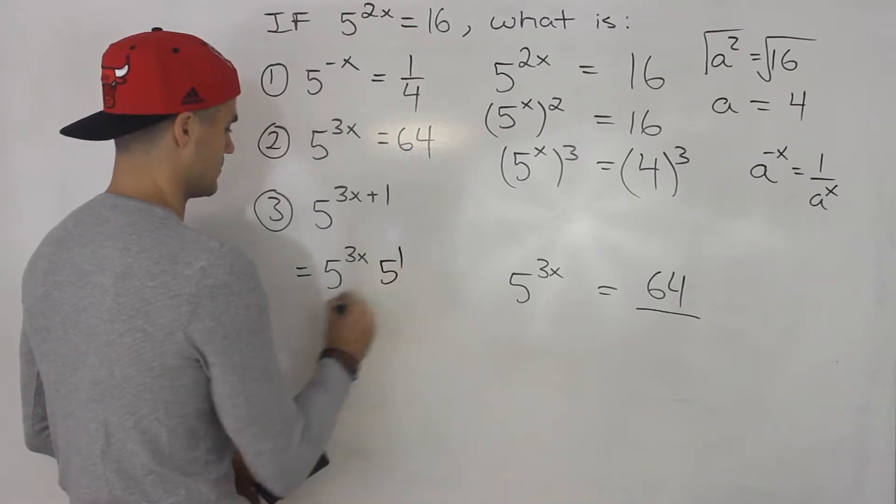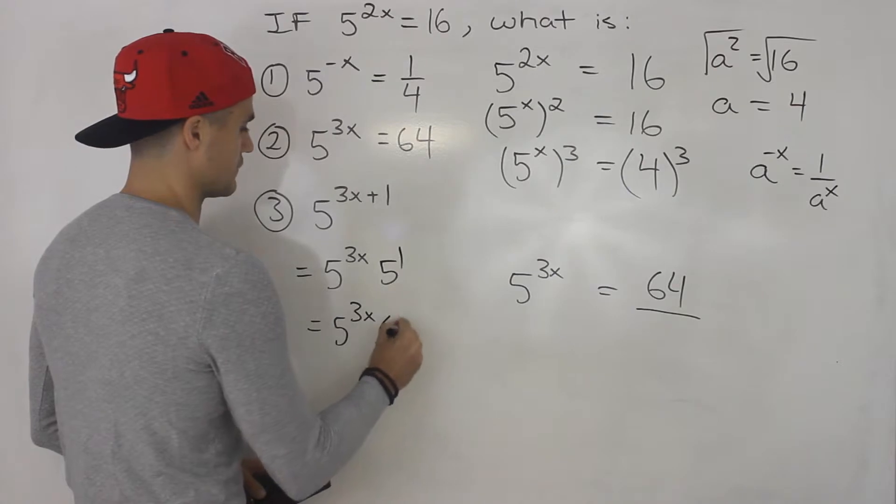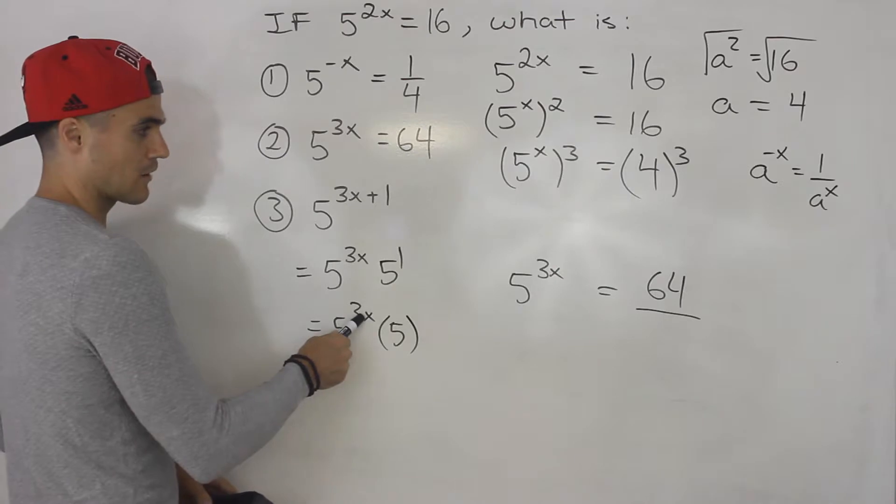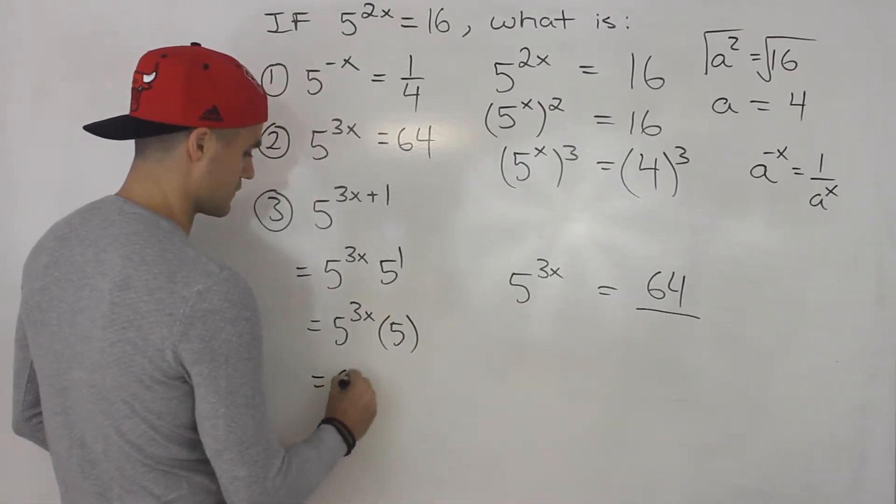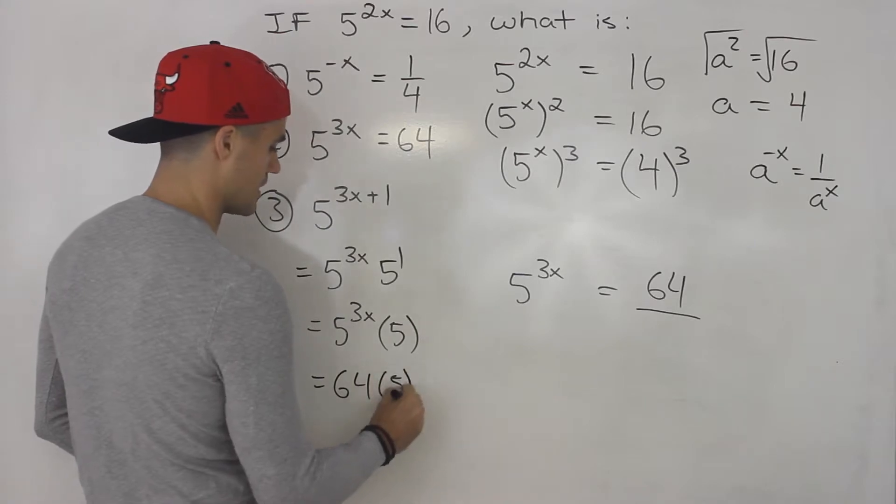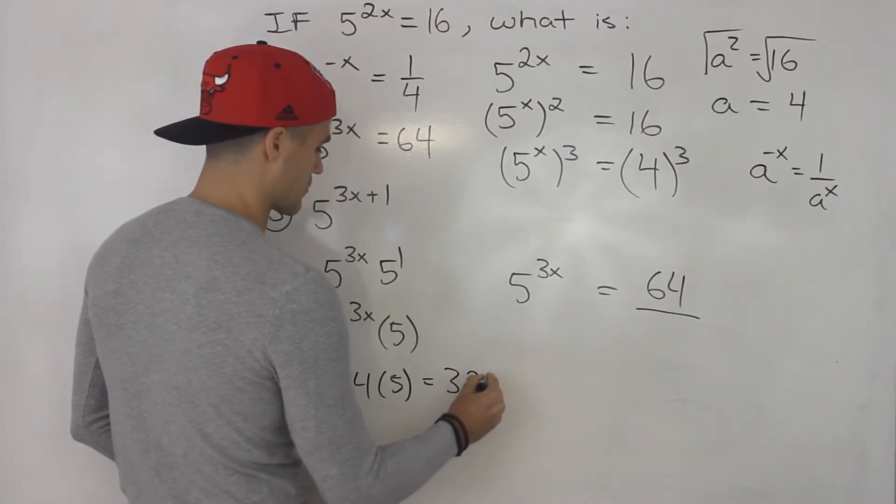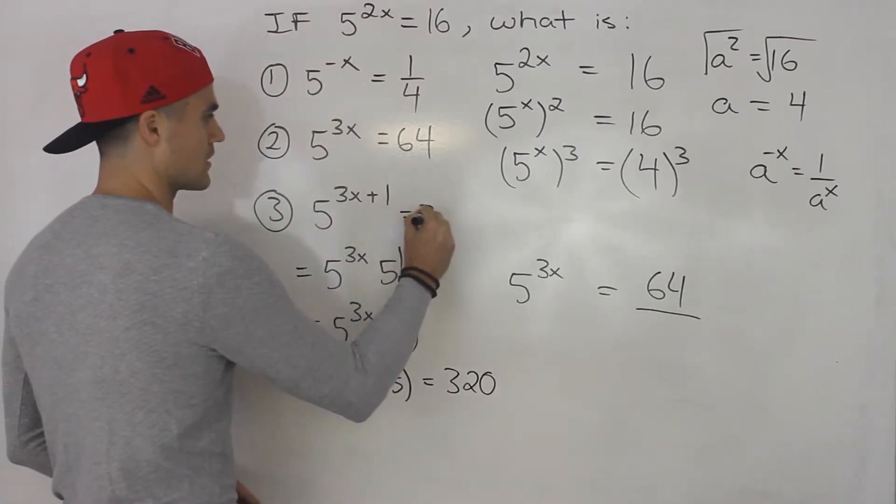Let me keep this written out. So we got 5 to the 3x and then this ends up being 5, right? 5 to the power of 1 is just 5. So 5 to the power of 3x, we already know that that's equal to 64. So 64 times 5 is the answer to this, which ends up being 320. So the answer to number 3 is 320.